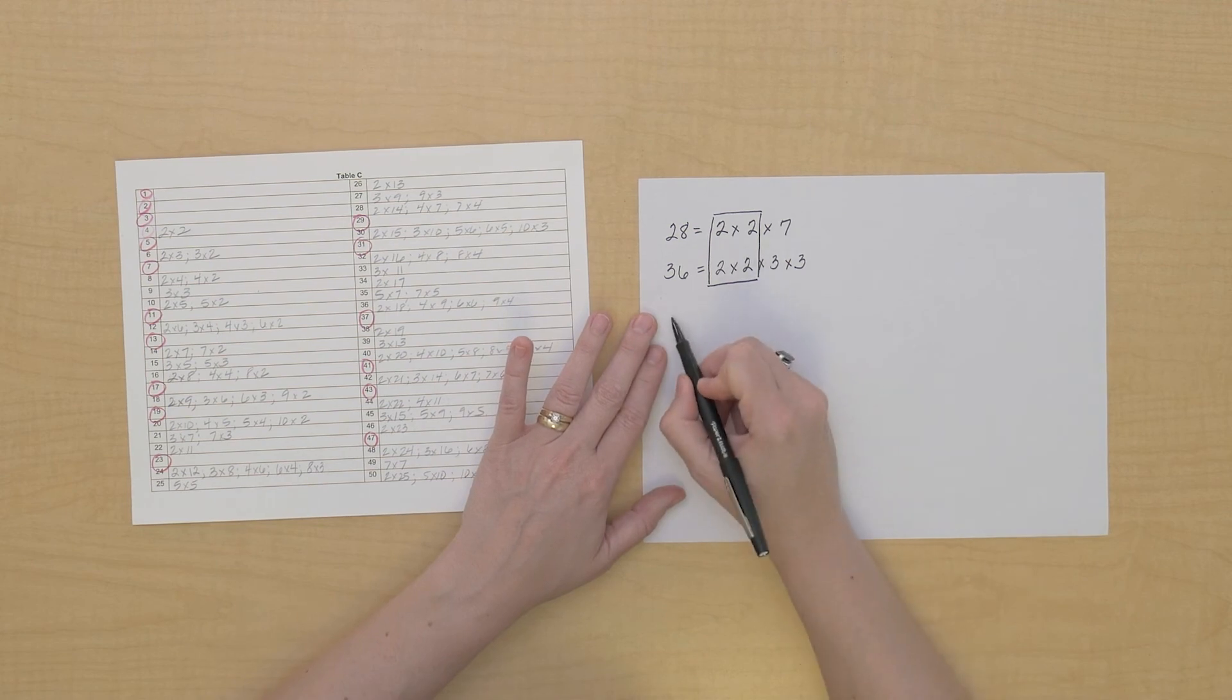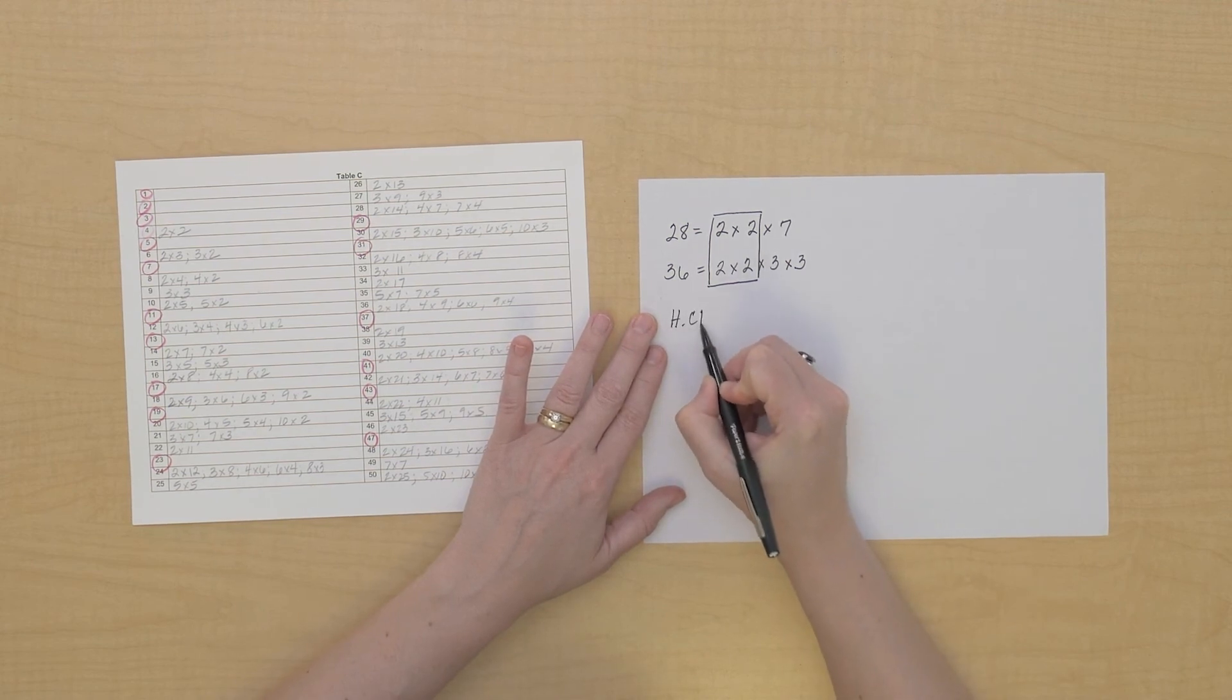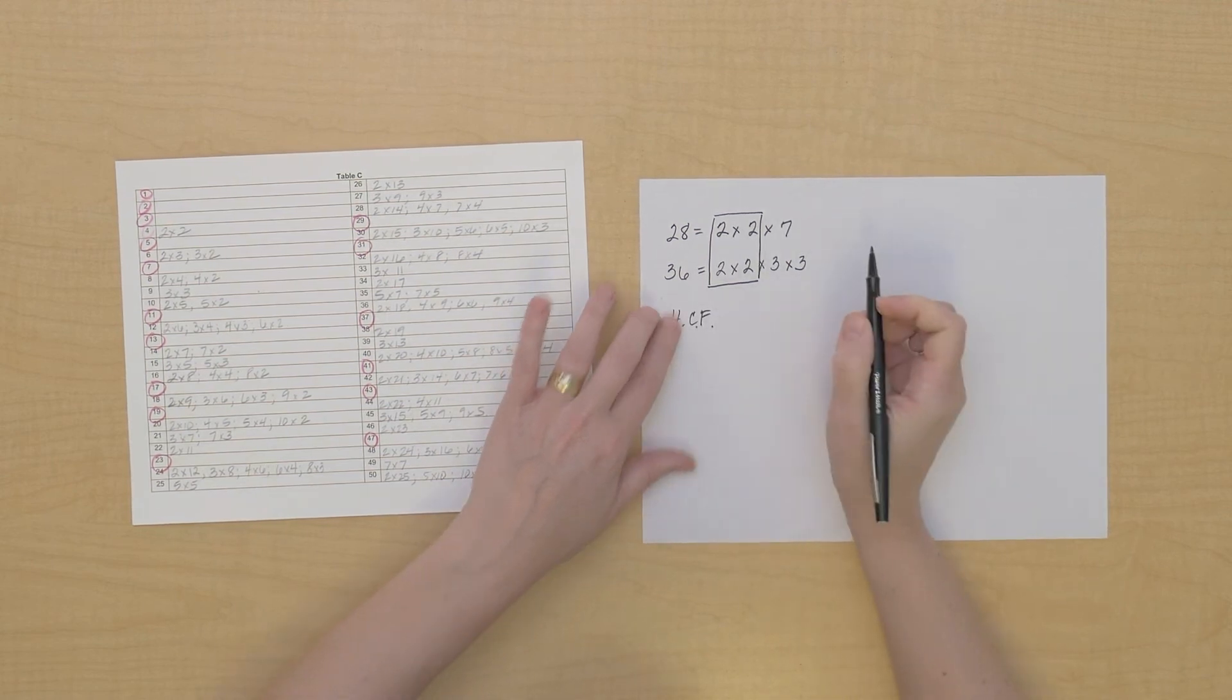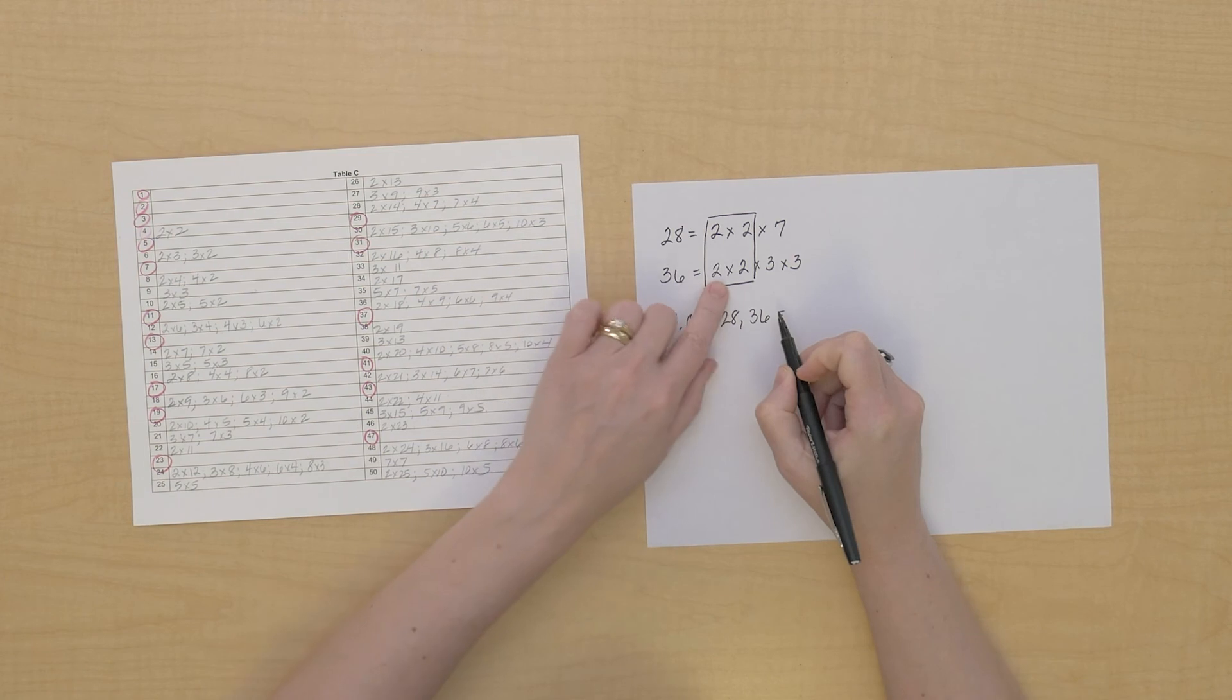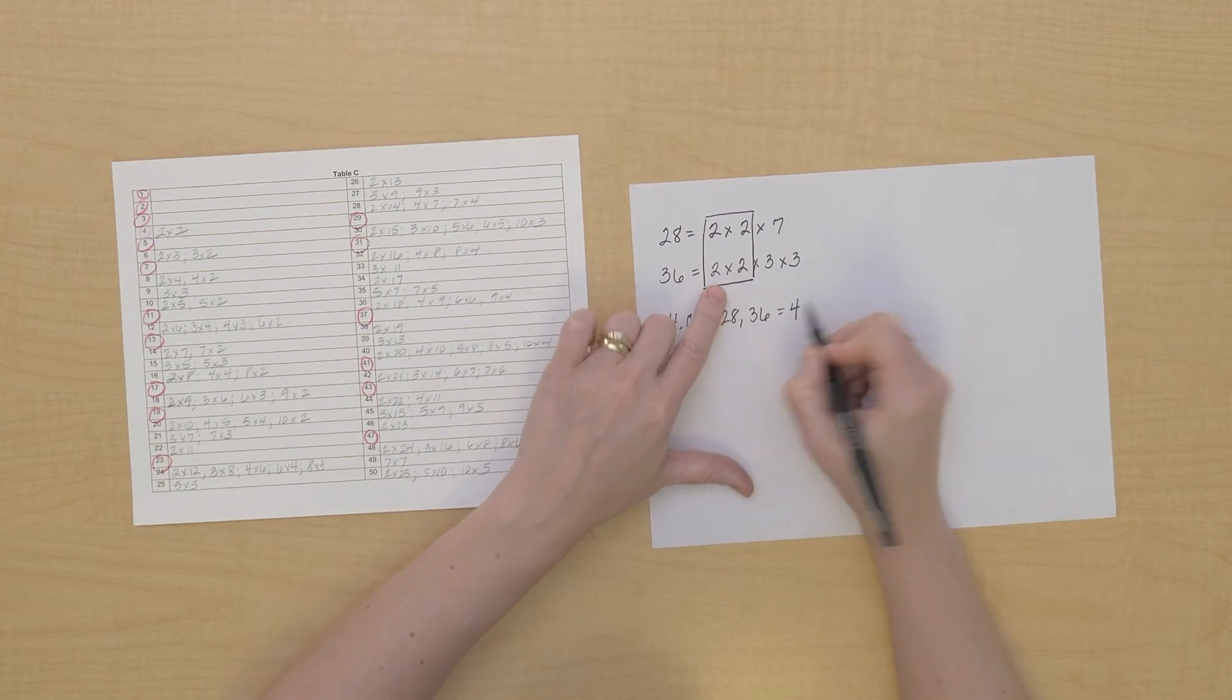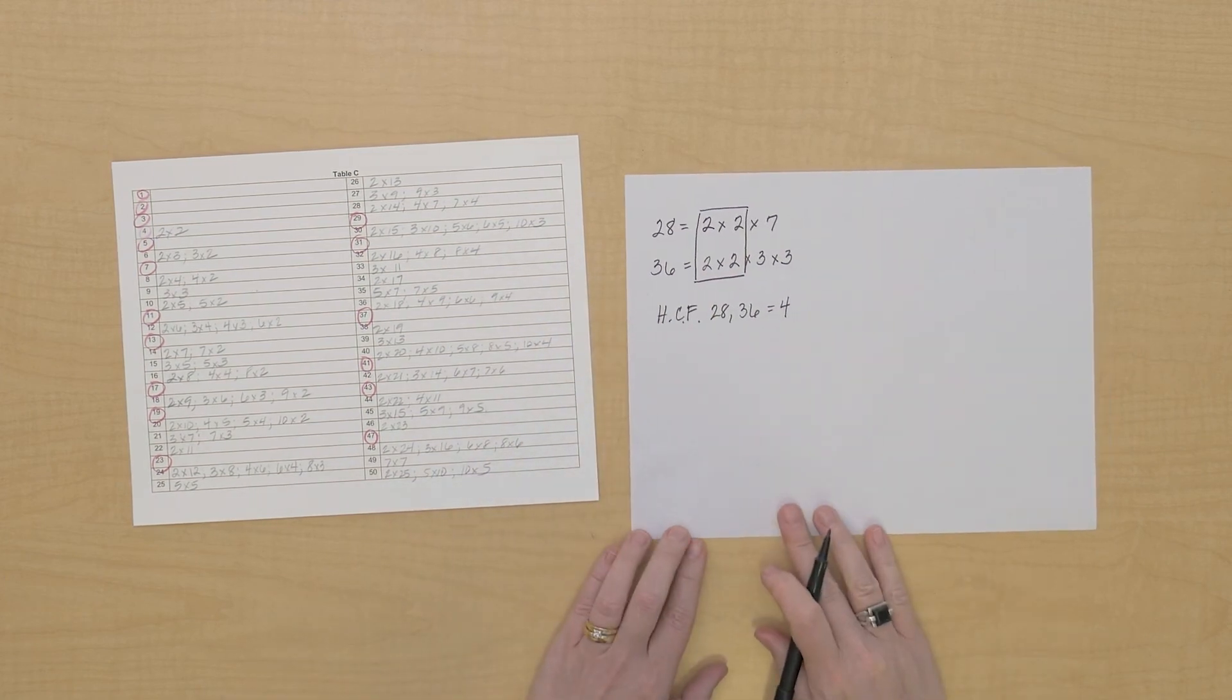That means that the highest common factor of 28 and 36 equals 2 times 2 equals 4. That's the highest common factor that they share. Why don't you find some more common factors?